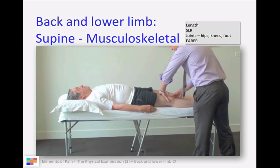Then check for any upper motor neuron signs. Don't forget about clonus - might be useful in patients such as those with multiple sclerosis.